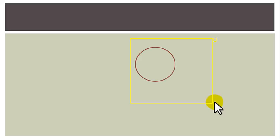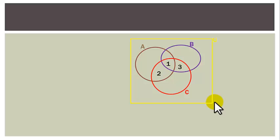Draw a rectangle representing U and then 3 subsets of U: A, B, and C. Then the disjoint subsets in this Venn diagram are 1, 2, 3, 4, 5, 6, 7, and 8.